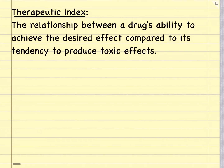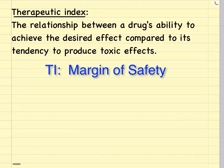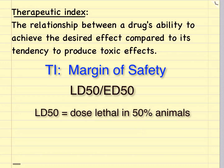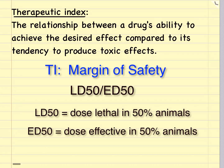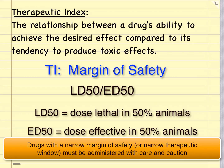Now let's look at the therapeutic index of a drug — a relationship between a drug's ability to achieve the desired effect compared to its tendency to produce toxic effects. It quantifies the drug's margin of safety and is expressed as a ratio between the LD50 and the ED50, where LD50 is the dose lethal in 50% of animals and ED50 is the dose that produces the desired effect in 50% of animals. Drugs with a narrow therapeutic window, like chemotherapy drugs, have a lethal dose very close to the effective dose and must be administered with great caution.